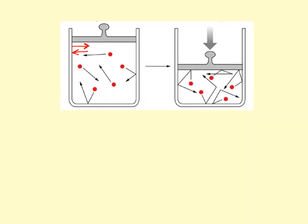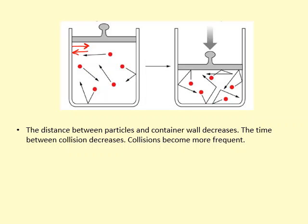But why? Firstly, the collisions become more frequent. Why do the collisions become more frequent? Because the particles have to travel less distance between collisions, so the time between collisions decreases.